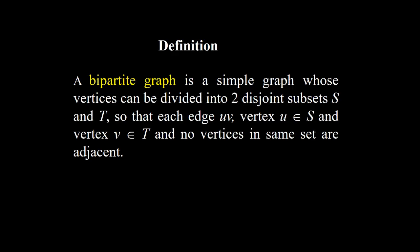Definition. A bipartite graph is a simple graph whose vertices can be divided into two disjoint subsets S and T, such that each edge UV has vertex U as an element of S and vertex V as an element of T, and no vertices in the same set are adjacent.